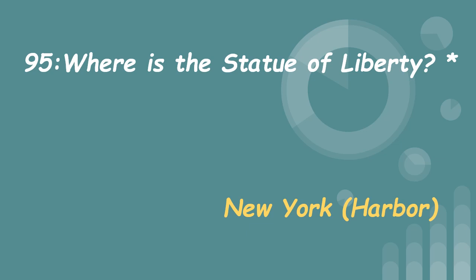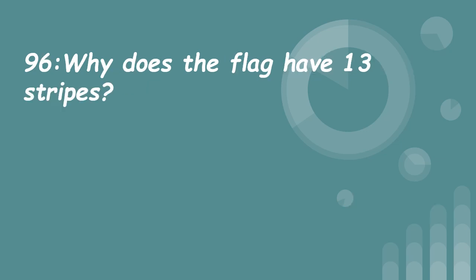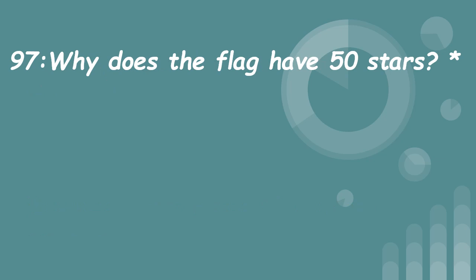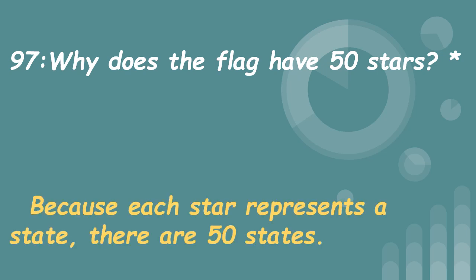96. Why does the flag have 13 stripes? Because there were 13 original colonies. 97. Why does the flag have 50 stars? Because each star represents a state, and there are 50 states.